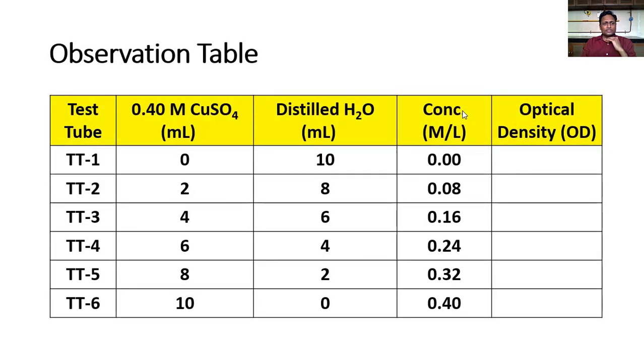This is the observation table which indicates how the test tubes are labeled, in what volume you have to take stock solution of copper sulfate, how you need to add water and what will be the concentration. In the same table, you need to note down the optical density after the test tubes are ready for optical density measurement. As the number of test tubes is increasing, you see volume of copper sulfate increasing by 2 ml and correspondingly distilled water volume is decreasing.